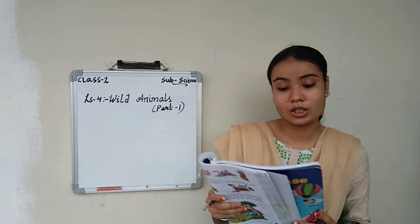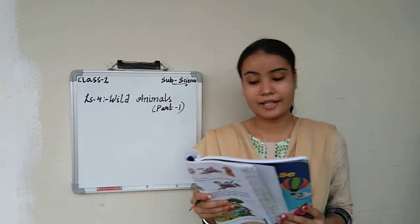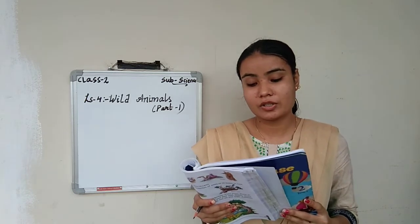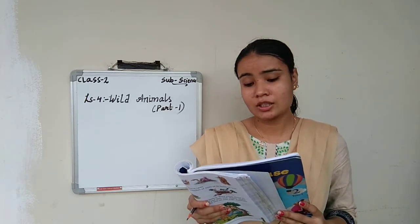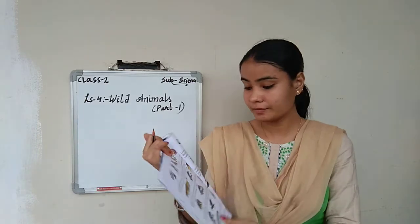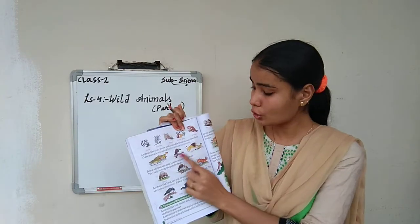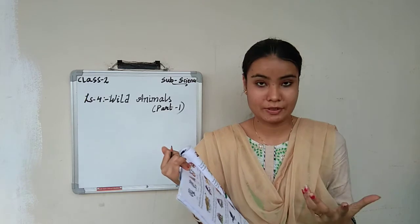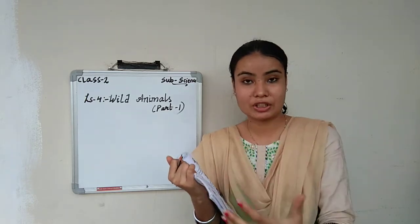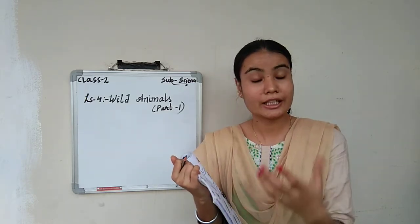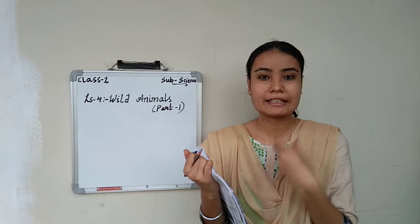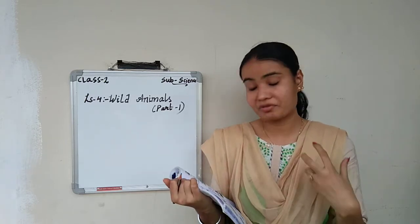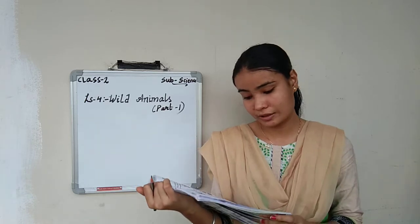Next is carnivorous. Animals like lion, hawk, and crocodile hunt and eat raw flesh. These animals are called flesh eaters or carnivorous. You can see crocodile, hawk, and lion — they hunt the animals and eat raw flesh. That's why these animals are called flesh eaters or carnivorous.